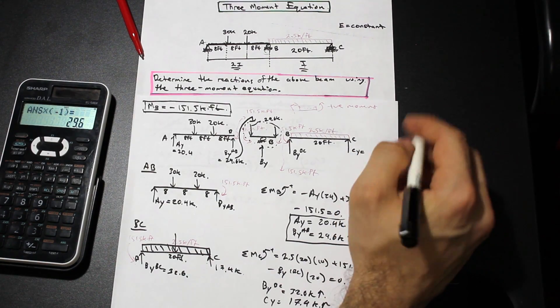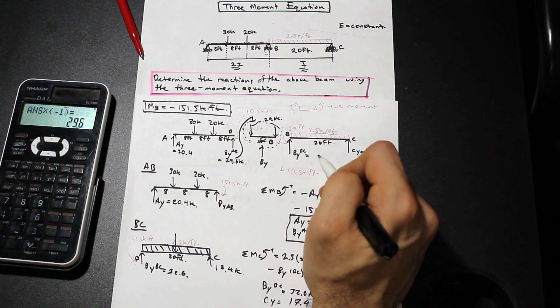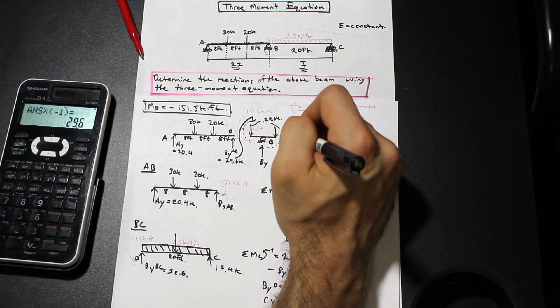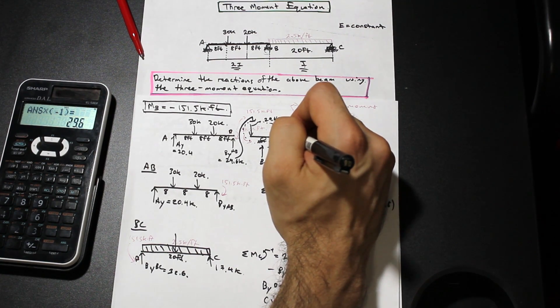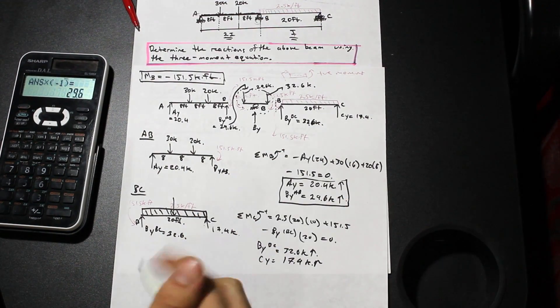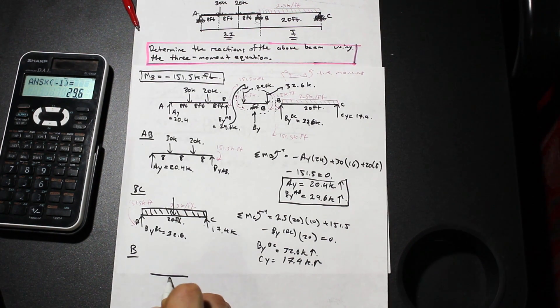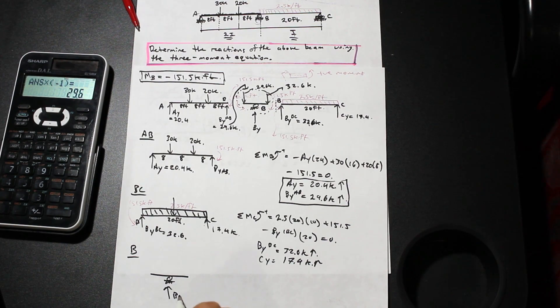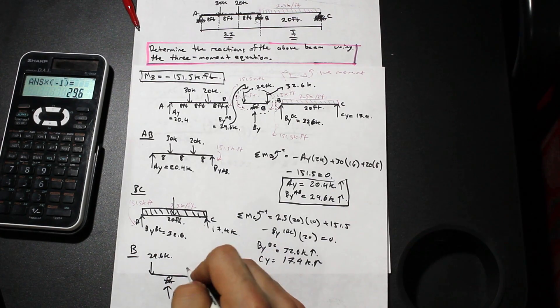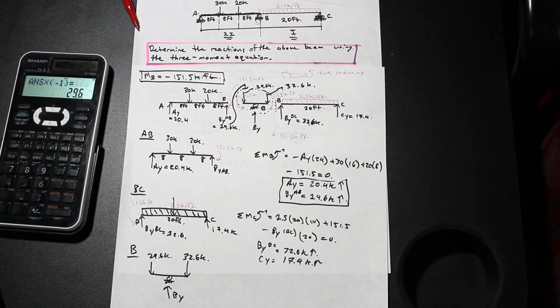We have 17.4 for this one and if we know that this is 32.6, we're going to know that this one, because we cut the beam right here, this force here is 32.6 kip. So I'm going to draw this portion here down here. We have section B, so what it's going to look like is we have our support here, we have BY, and we have a 29.6 kip force here and we have a 32.6 kip force here.